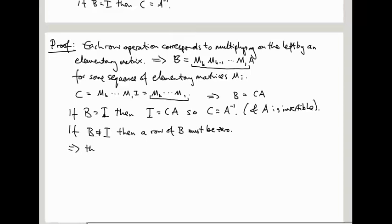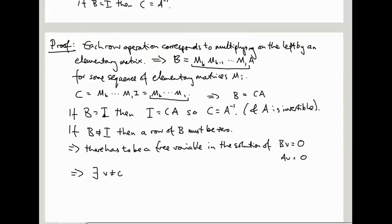So what does that mean? That means there has to be a free variable in the solution of BV equals zero. And remember, this is equivalent to solving AV equals zero by performing row operations. So in other words, there is at least one non-trivial solution to this equation. So there exists a V not equal to zero such that AV equals zero. But then A can't be invertible. So if A were invertible, then V would be A inverse zero, but that would be zero.